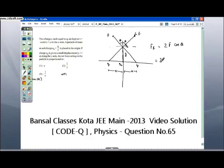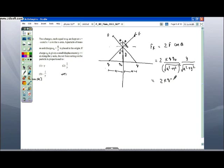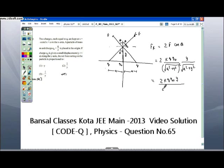Using Coulomb's law, I can write 2F cos theta equals 2KQQ0 divided by the square root of A square plus Y square, the separation between the two charges, and cos theta equals Y upon square root of A square plus Y square.